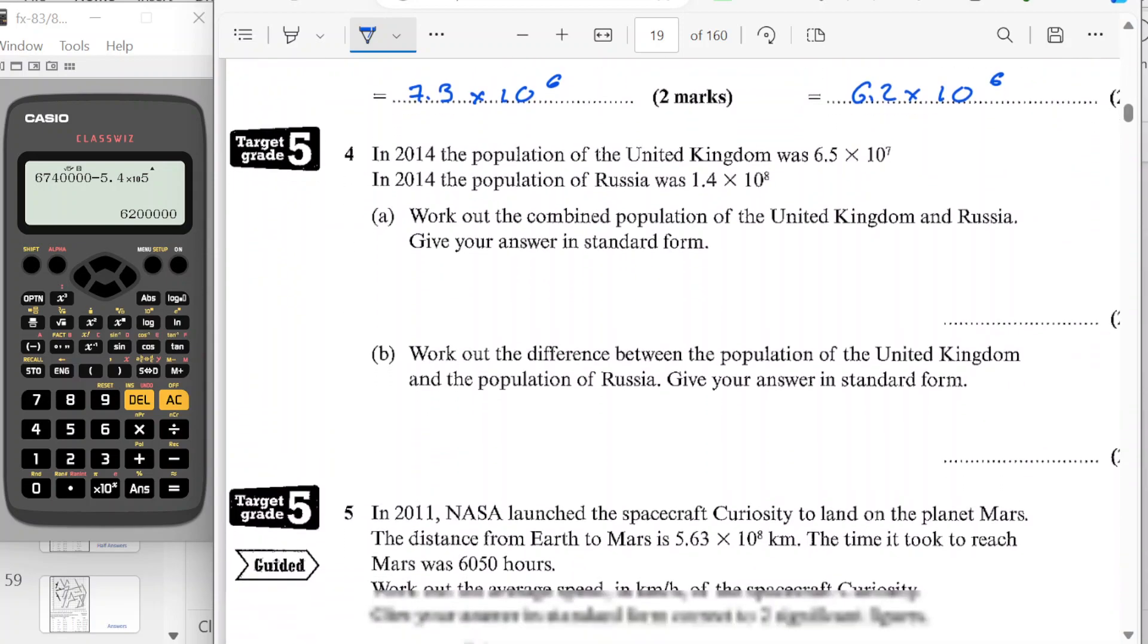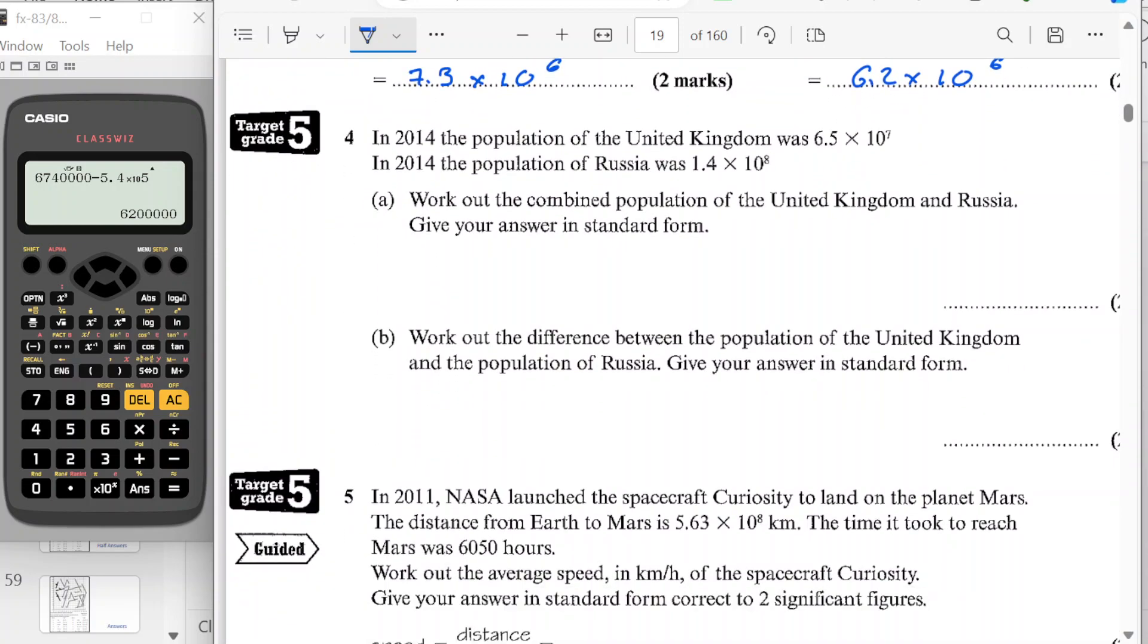Okay, question four. In 2014, the population of the United Kingdom was this. In 2014, the population of Russia was this. Work out the combined population of the two. So in effect, I'm doing the United Kingdom plus Russia. And I'm just going to use my calculator.